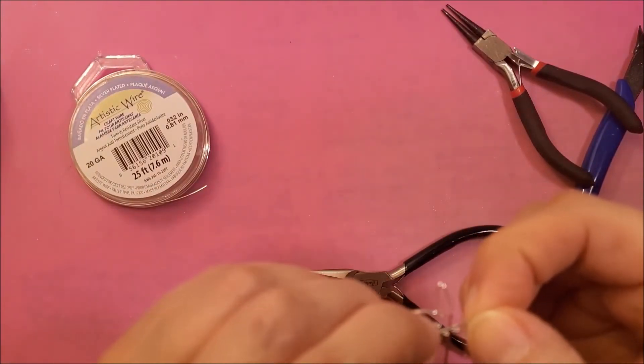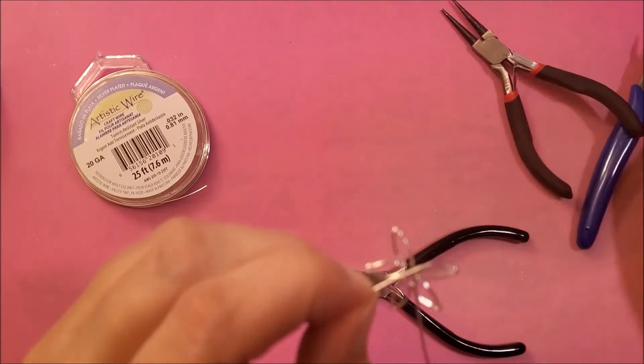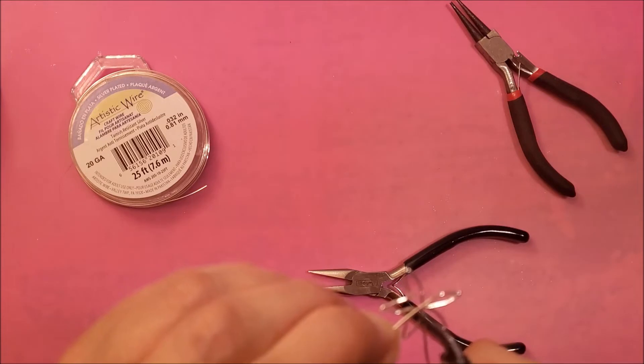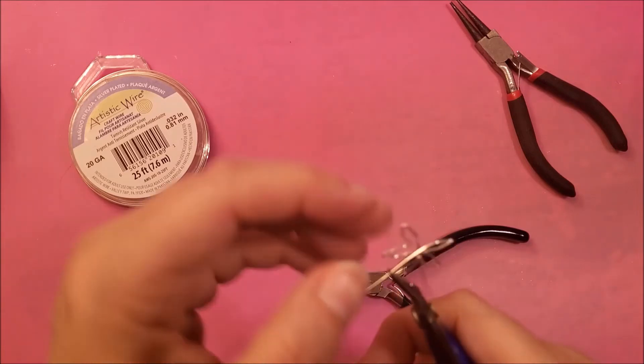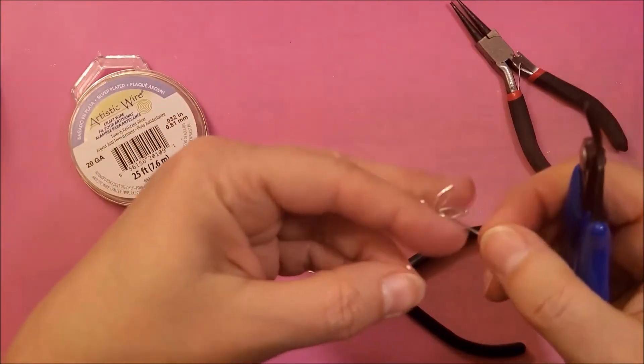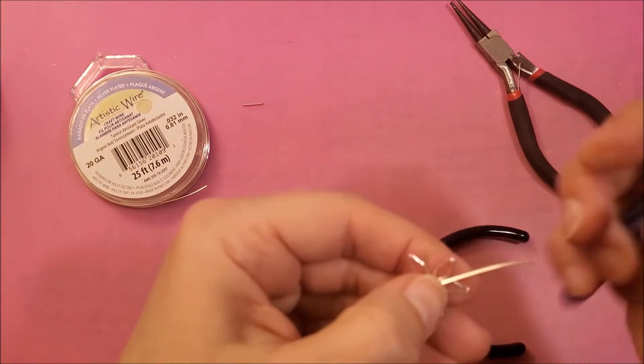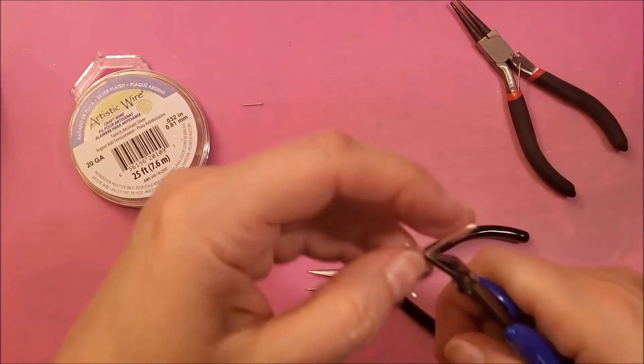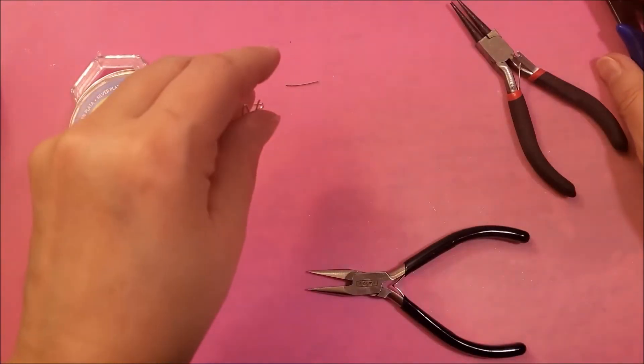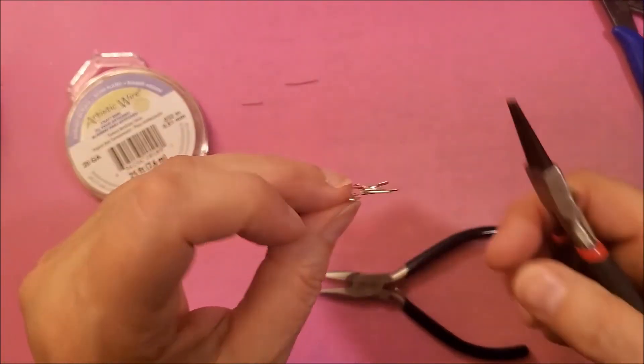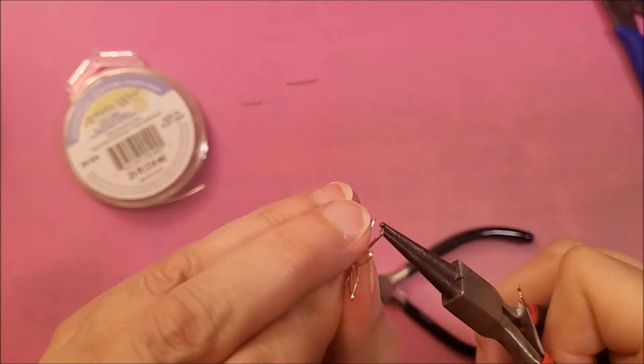Now you'll need your chain nose and we'll start opening them up a little more but what we're going to do is we're going to round it a bit to create a petal and then you're going to do that with each one.